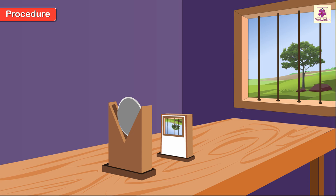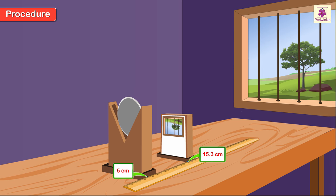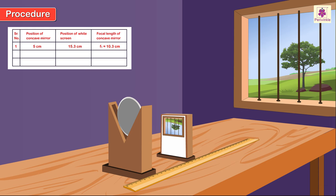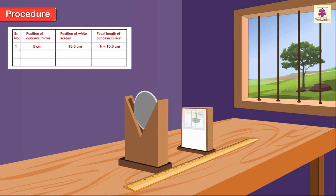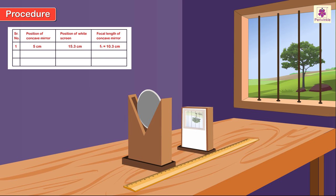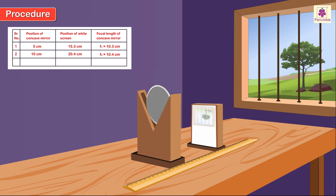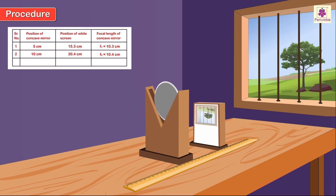Step 5: Using a meter scale, accurately measure the distance between the pole of the mirror and the screen. Step 6: Record the distance as F1. Step 7: Repeat the earlier steps twice to obtain two more readings F2 and F3.